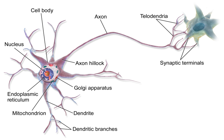Some other types of neurons have consistent effects — for example, excitatory motor neurons in the spinal cord that release acetylcholine, and inhibitory spinal neurons that release glycine. The distinction between excitatory and inhibitory neurotransmitters is not absolute. Rather, it depends on the class of chemical receptors present on the postsynaptic neuron. In principle, a single neuron releasing a single neurotransmitter can have excitatory effects on some targets, inhibitory effects on others, and modulatory effects on others still.